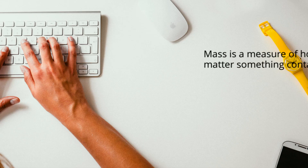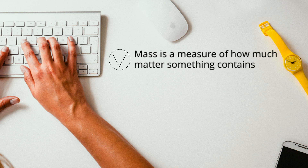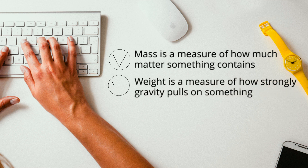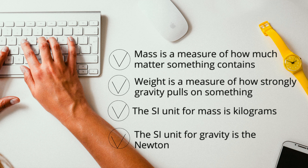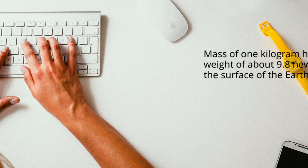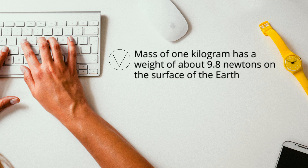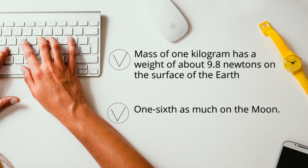So in conclusion, mass is a measure of how much matter something contains, which equals the number of atoms in it. Weight is a measure of how strongly gravity pulls on something. The SI unit for mass is kilograms, and the SI unit for weight is the Newton. For example, an object with a mass of 1 kilogram has a weight of about 9.8 Newtons on the surface of the earth and about 1 sixth as much on the moon.